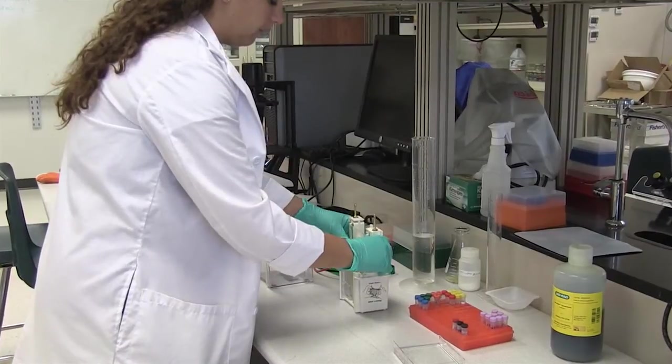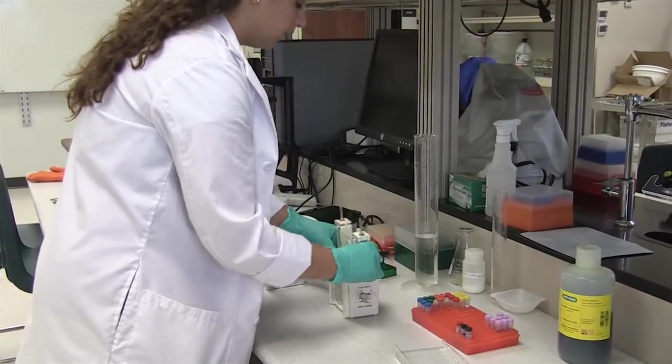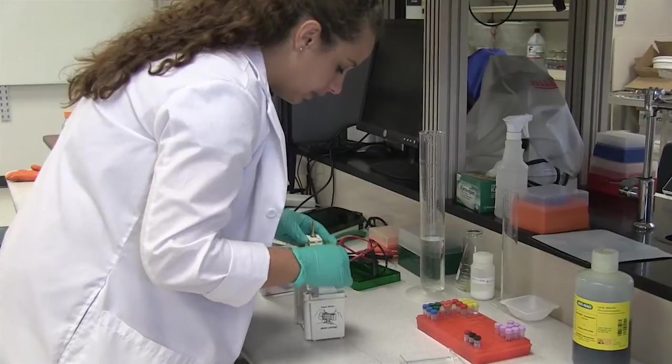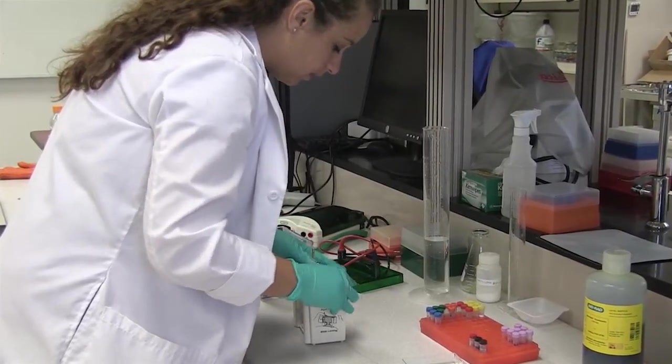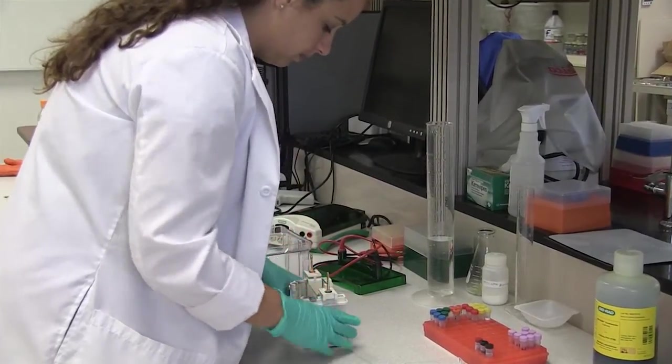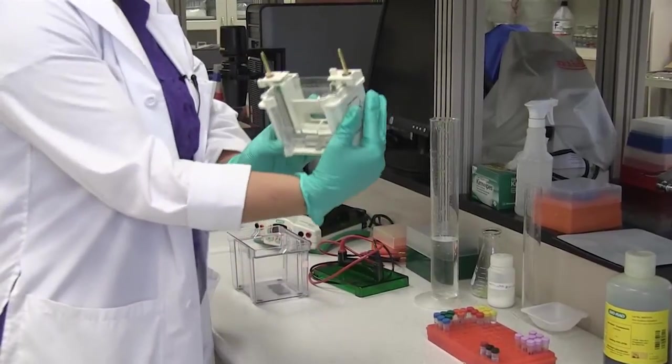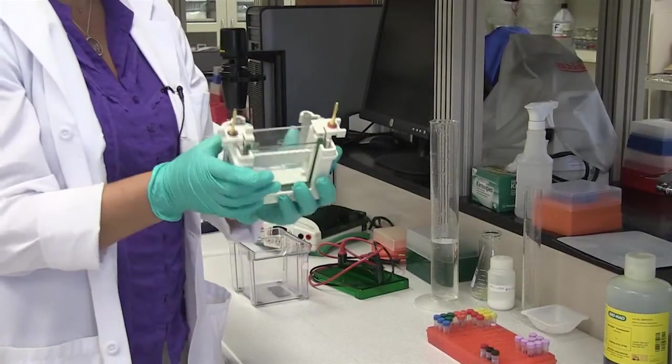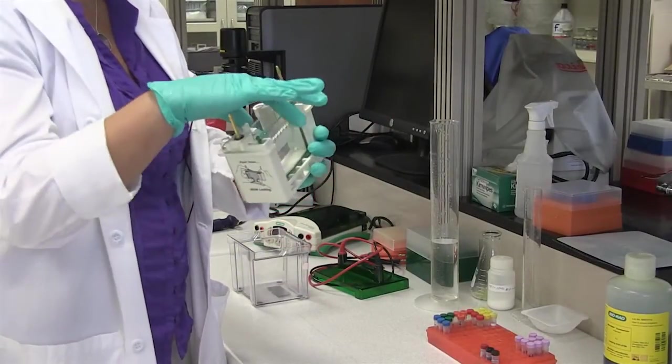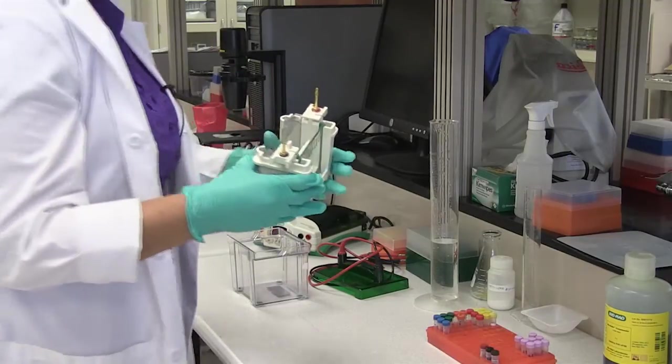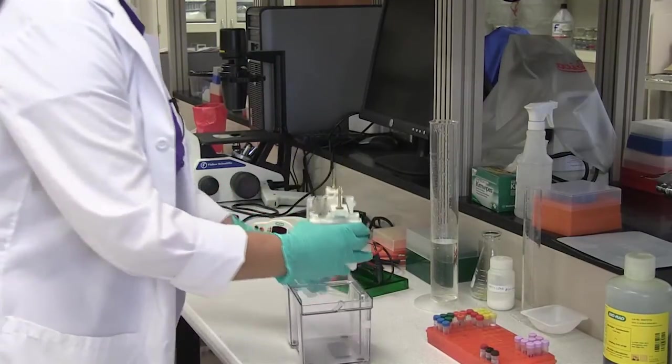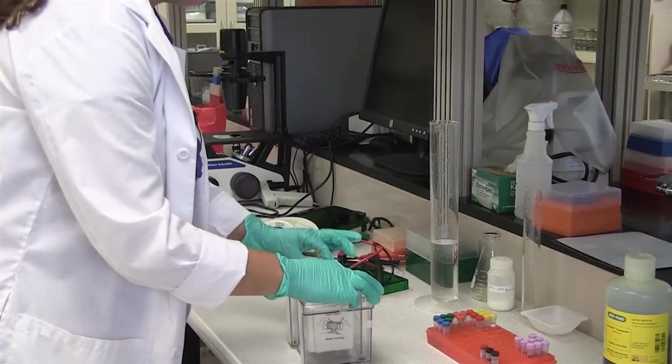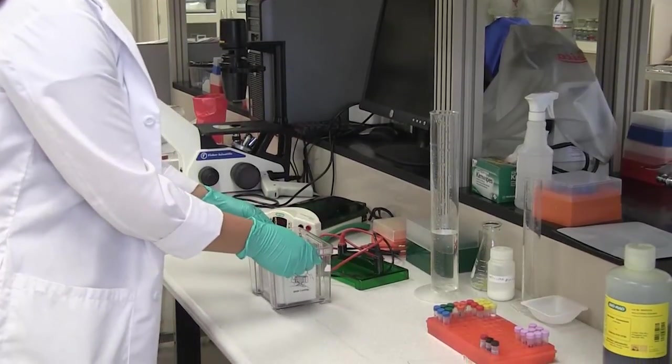This is a vertical electrophoresis, which is similar in theory to the horizontal. So now you have your assembled cassette. It should be very snug. You don't want any loose wobbling in there. We will take this and put it into the box.